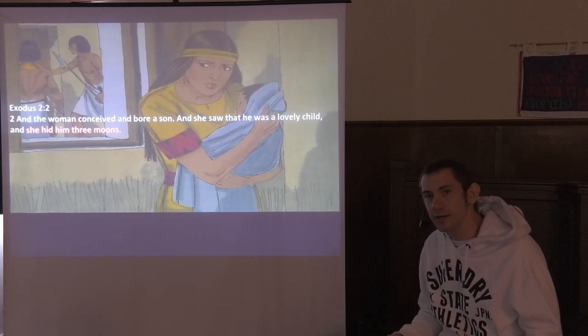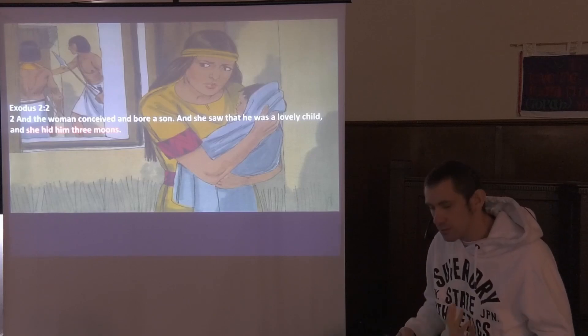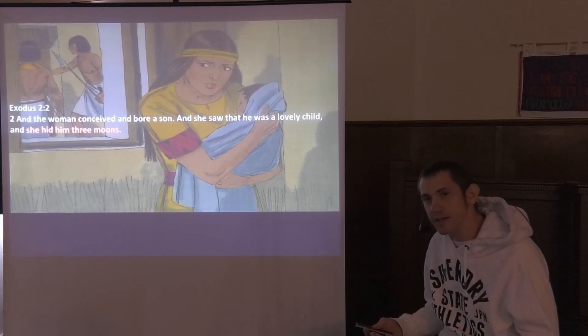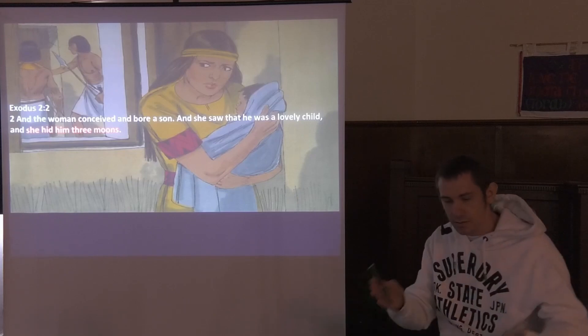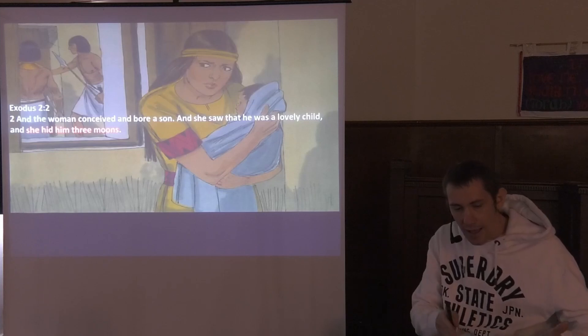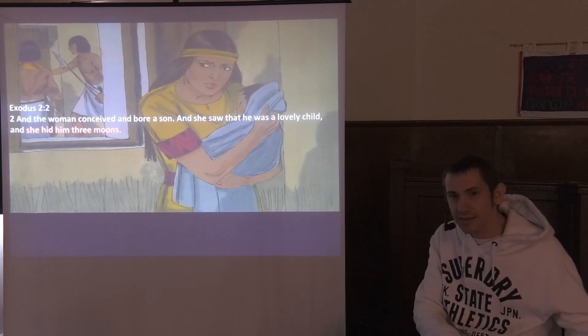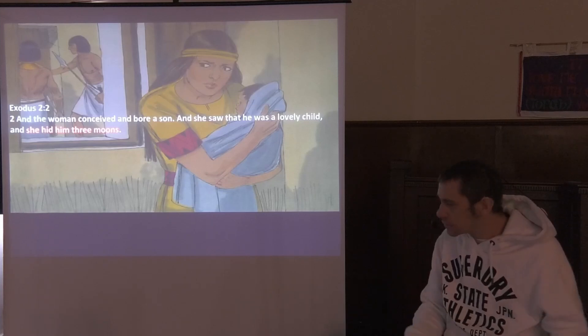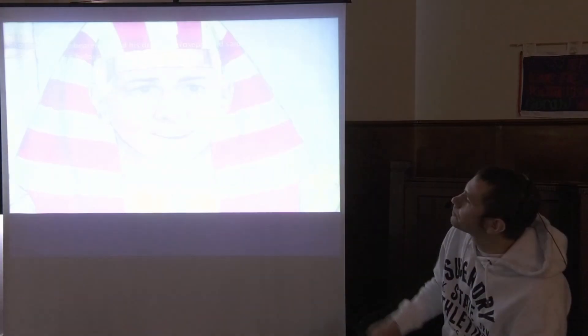With these messianic figures, the number three commonly appears. Moses was hidden three months — the woman saw he was a lovely child and hid him three months. When we see this number three around these sorts of events, it's a hint that we're going to see something messianic: the number three, death or certain death, changing to life.